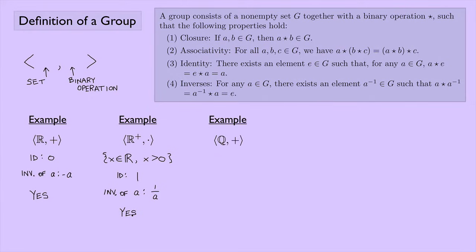How about the set of rational numbers under addition? Do we have closure? If you add any two rational numbers, you get back another rational number — yes. Associativity? Yes, you can move parentheses around when adding rational numbers. What would the identity element be? With addition, that would be zero, and zero is a rational number. Do we have inverses? The inverse of some element A would be negative A, and if you take a rational number and make it negative, it's still a rational number. So yes, this is indeed a group.